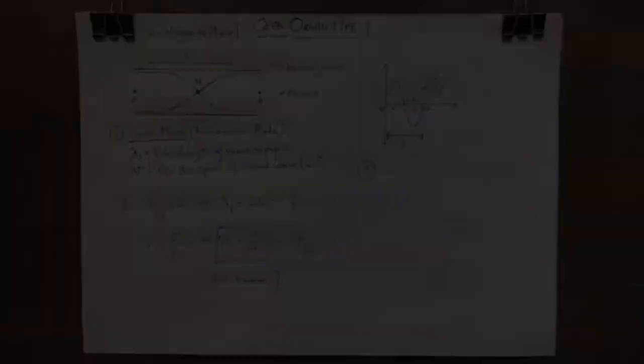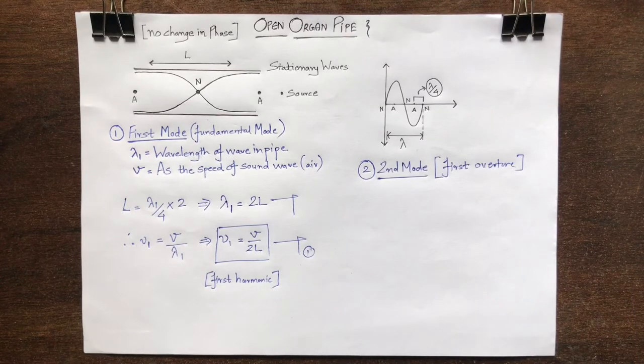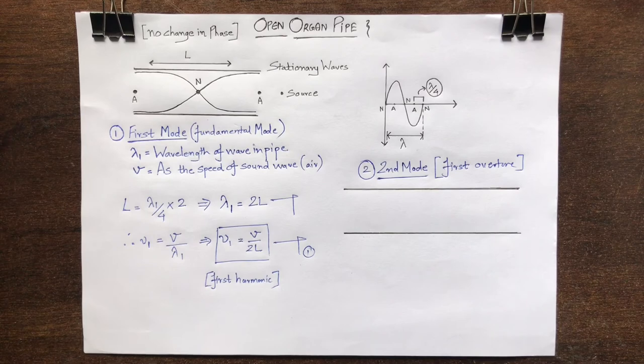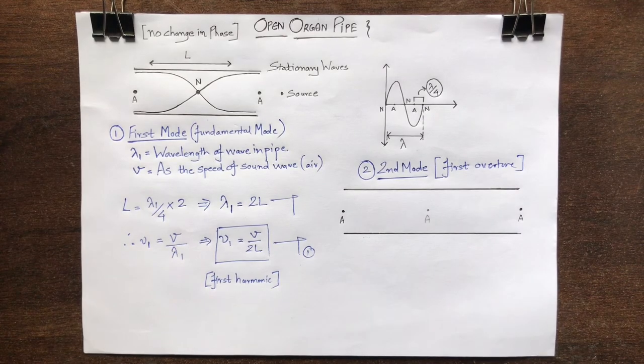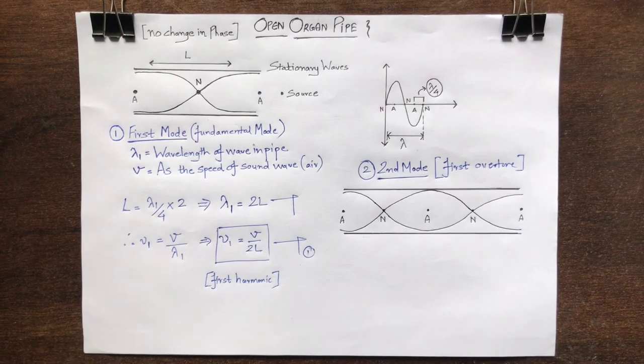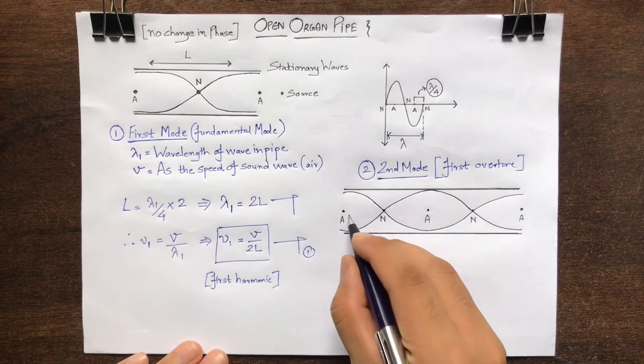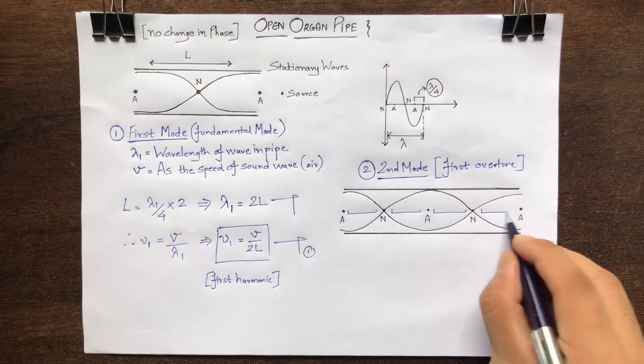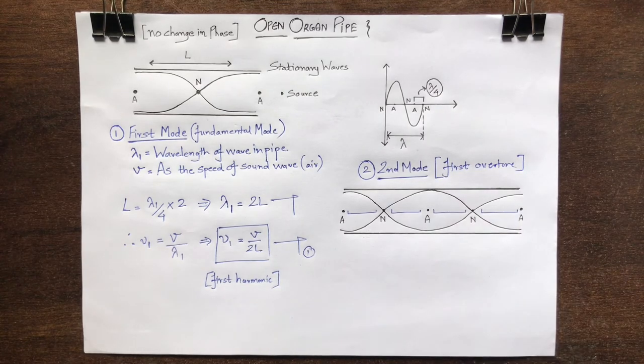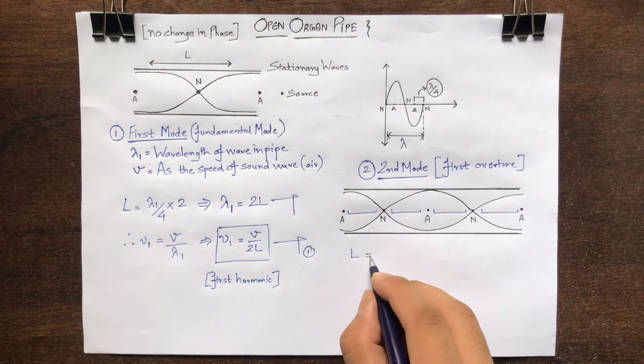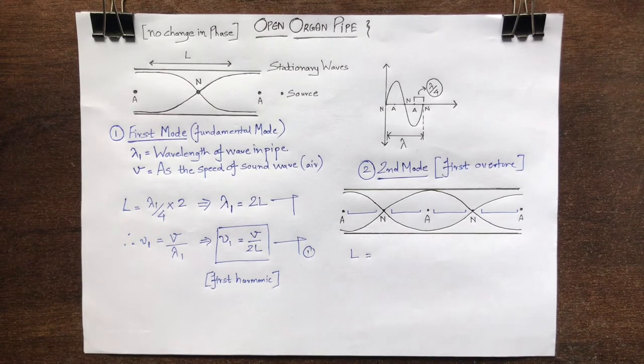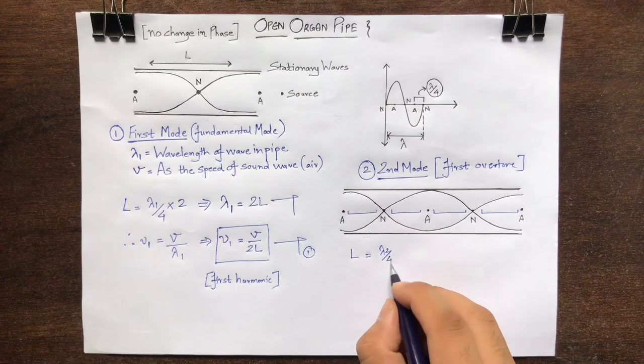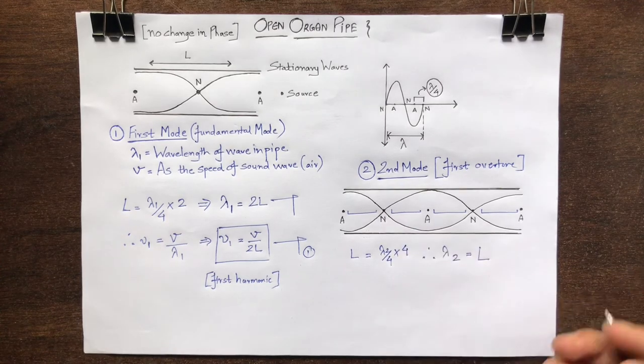Next, we have the second mode, which is also known as the first overtone. This mode of vibration is shown in the figure, in which there is one additional antinode and two nodes between the ends of the pipe. As there are four separations of adjacent antinodes and nodes, therefore, the length of the considered organ pipe will be equal to lambda 2 by 4 times 4, which gives us the value of lambda 2 as L.